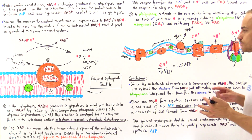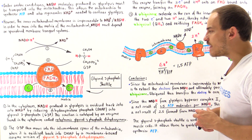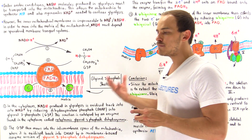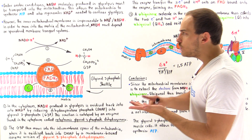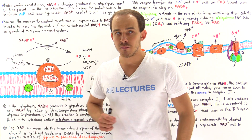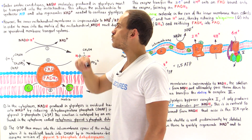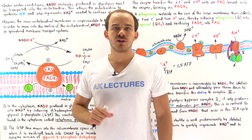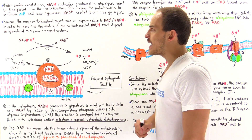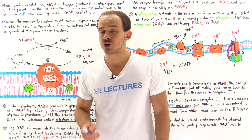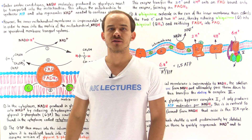The glycerol 3-phosphate shuttle is used predominantly by skeletal muscle cells. It allows skeletal muscle cells not only to use the high-energy electrons to generate the much-needed ATP molecules, but also to regenerate the NAD+ molecules needed to continue glycolysis. This is not the only type of shuttle; in the next lecture, liver cells and cardiac muscle cells use a slightly different shuttle system.